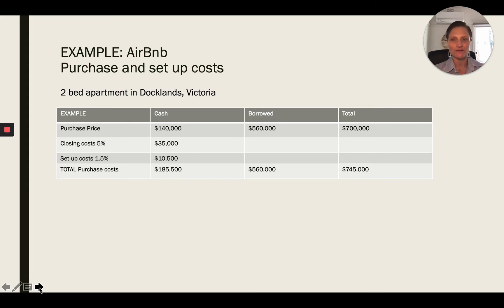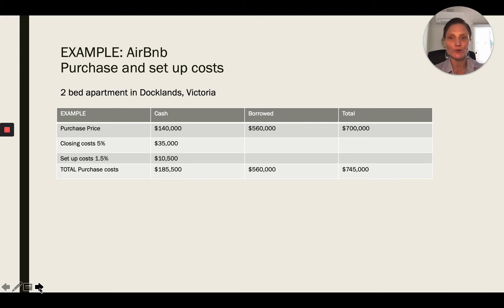We'll do an Airbnb example first. I've chosen a two-bedroom apartment in the Docklands, Victoria. The purchase price is $700,000. Cash required is $140,000 — that's 20%. You borrow 80%, which is $560,000. Closing costs at 5% are $35,000, and setup costs at 1.5% are $10,500. So the total cash required is $185,500, total borrowings are $560,000, and the total amount needed to purchase and set up for Airbnb is $745,000.